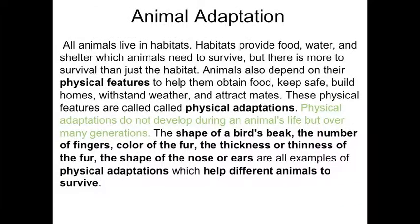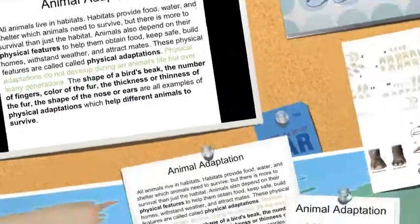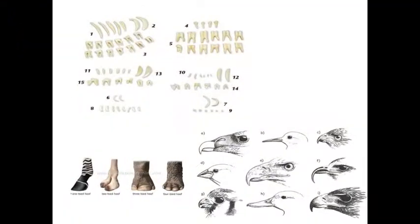All animals live in habitats. Habitats provide food, water, and shelter, which animals need to survive. Physical adaptations do not develop during an animal's life, but over many generations. Here are some differences in animal features. Each one of these features is created to help an animal survive.